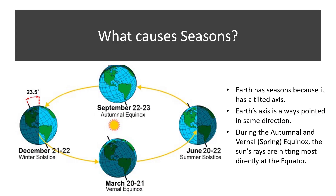The seasons greatly affect weather. Earth has seasons because its axis is tilted. Earth's axis is always pointed in the same direction, so different parts of Earth get the sun's direct rays throughout the year.